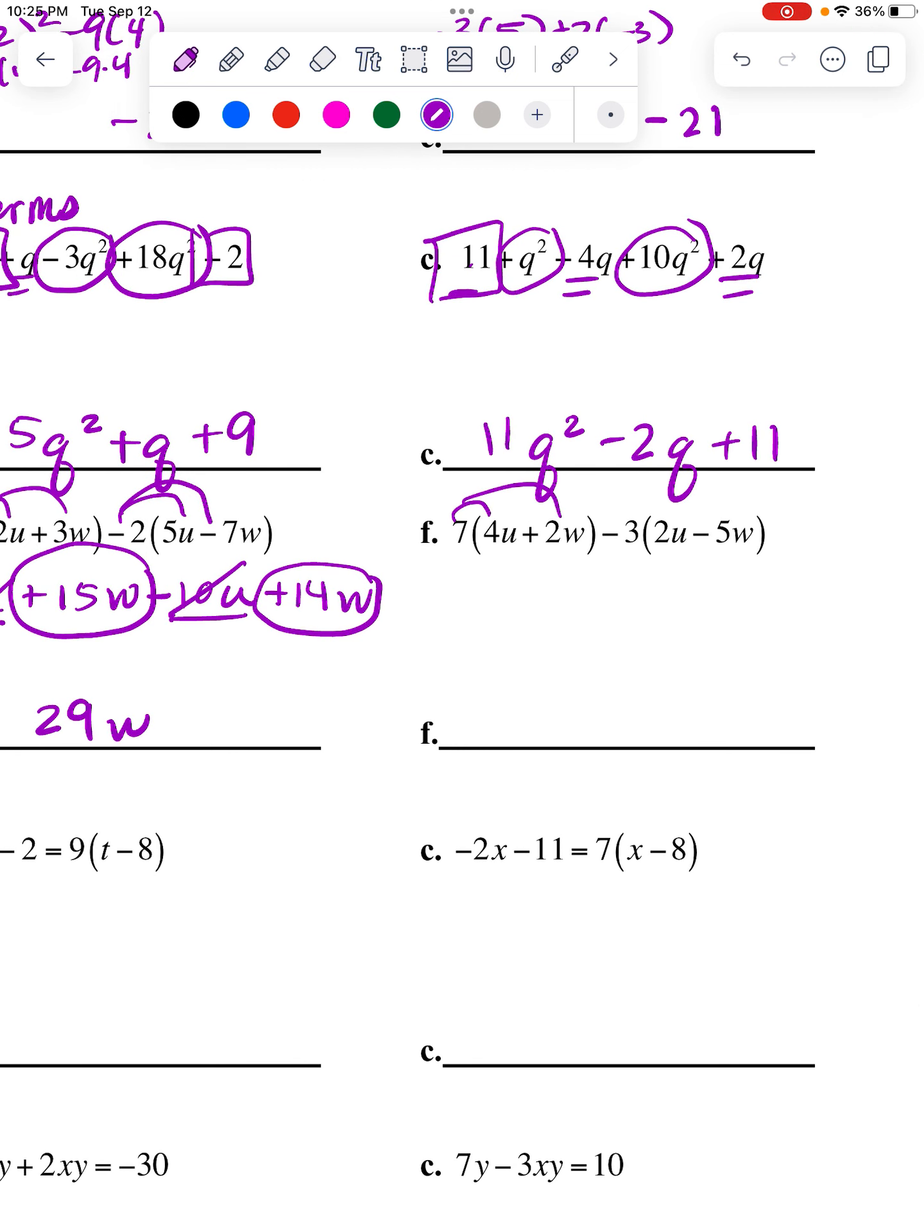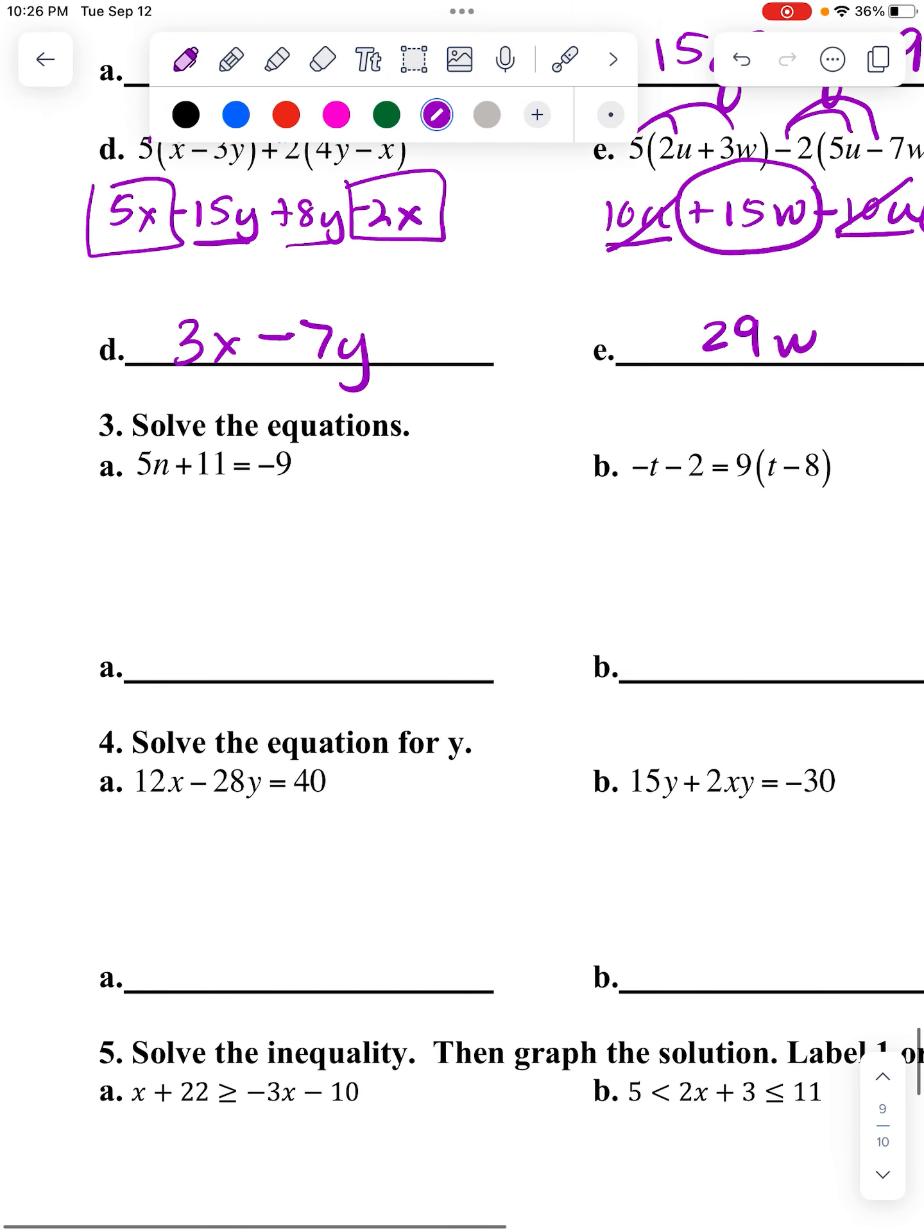Same thing here. This one's pretty slick. So I have 28U plus 14W. But here I'm going to be really careful because that turns into negative 6U. But here the negatives cancel, and I get 15W. So when I put them together, 28 minus 6 is 22U's, and then 14 plus 15 will be 29W.